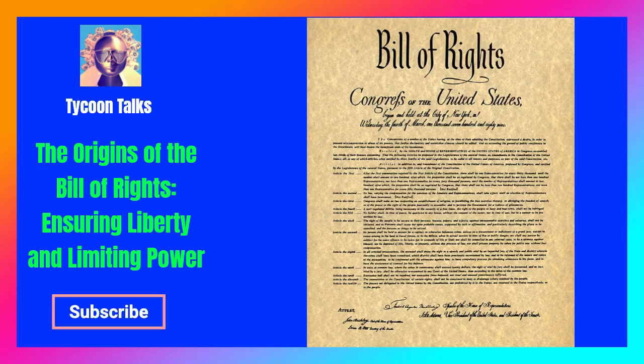The origin of the Bill of Rights is rooted in the debates and concerns that emerged during the early years of the United States. Here's a detailed look at how the Bill of Rights came into existence. Historical Context: After the American Revolutionary War, the Articles of Confederation created a weak central government with limited powers, leading to economic instability and difficulties in governing effectively. In response, the Constitutional Convention was convened in Philadelphia in 1787 to address these problems and draft a new framework of government.